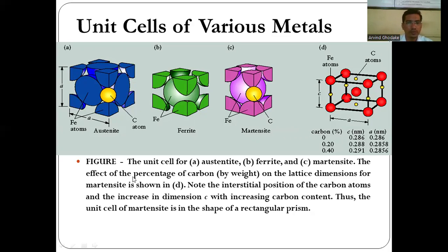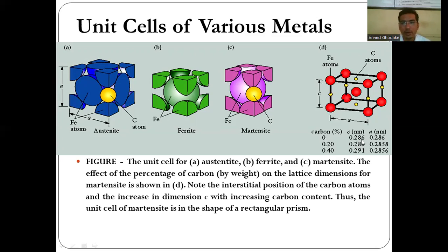The effect of percentage of carbon by weight on the lattice dimensions for martensite is shown in the figure. Note the interstitial position of the carbon atoms and the increasing dimension of C with increasing carbon content. Thus the unit cell of martensite is in the shape of a rectangular prism. If carbon percentage is 0, then the lattice spacing C equals 0.286 nm and length a equals 0.286 nm. As percentage of carbon increases, this spacing increases.